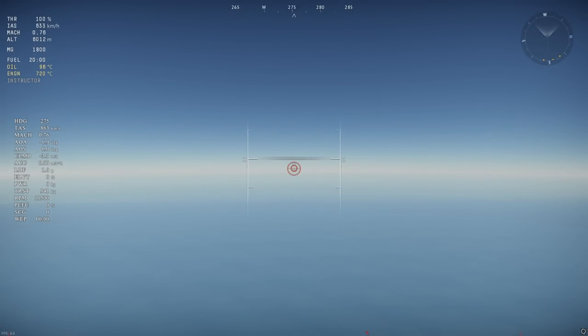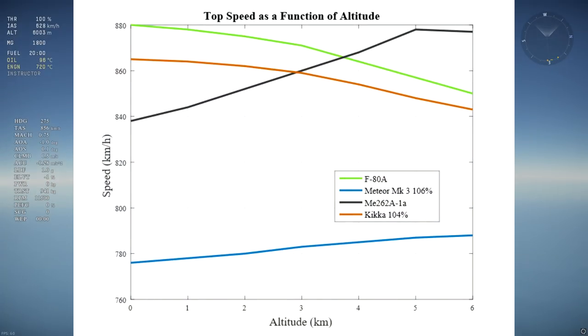Let's start with top speed. As usual, I stay a long time at a given altitude to record an accurate top speed value. Testing the top speed of jets actually takes longer than for props, for a reason I won't get into in this video. On this graph of speed as a function of altitude, the top speeds of all four aircraft are plotted at every kilometer from sea level to 6 kilometers. As you can see, top speed for early jets doesn't change much with altitude.